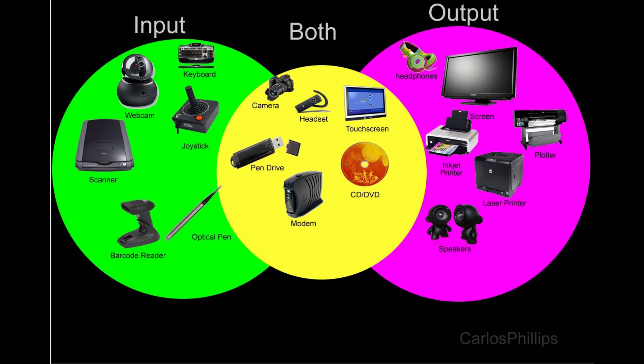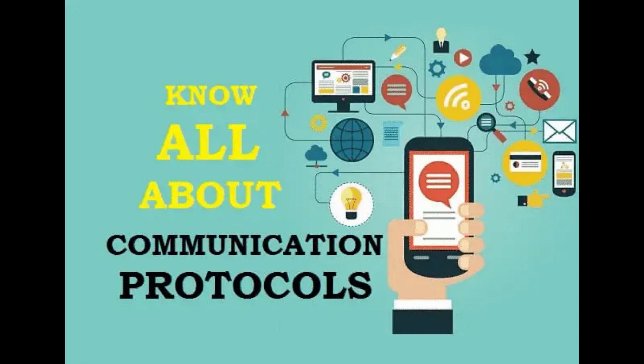Input and output: Embedded systems interact with the external world through input and output mechanisms. Inputs can come from sensors, buttons, switches, or communication interfaces, while outputs can be displayed on screens, sent through communication interfaces, or used to control actuators. The design of input and output interfaces is critical for overall system functionality and usability.